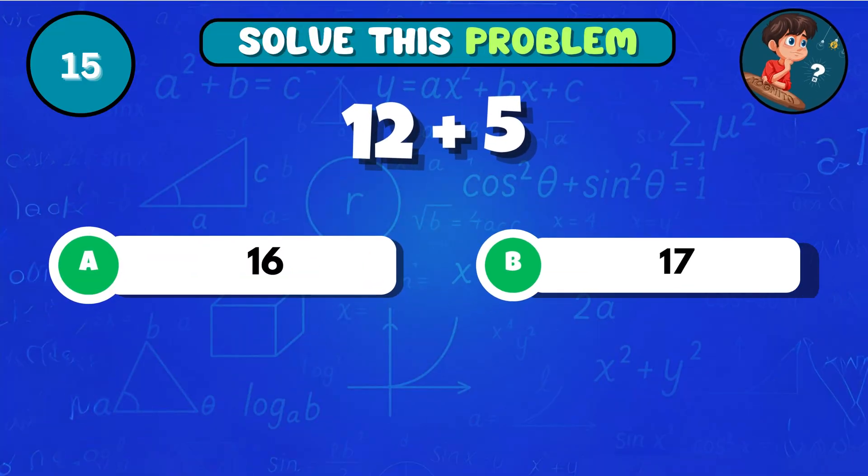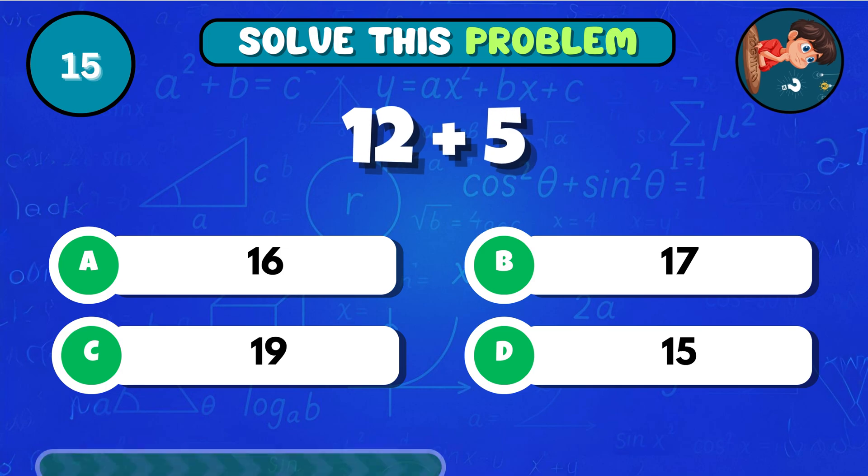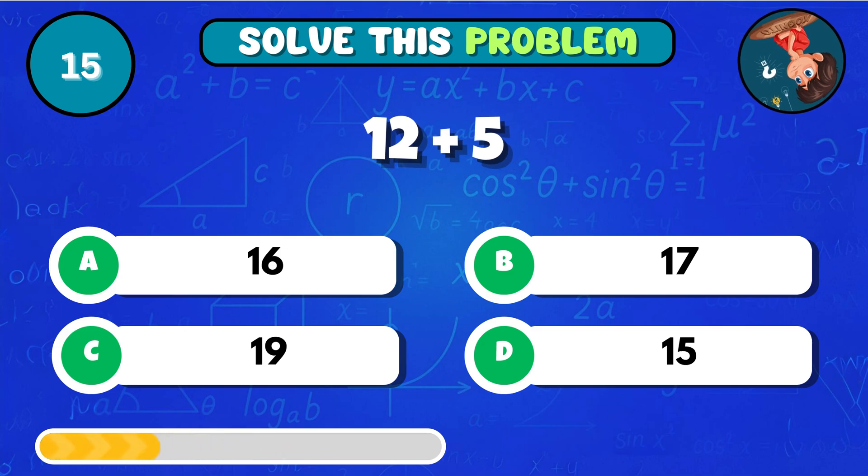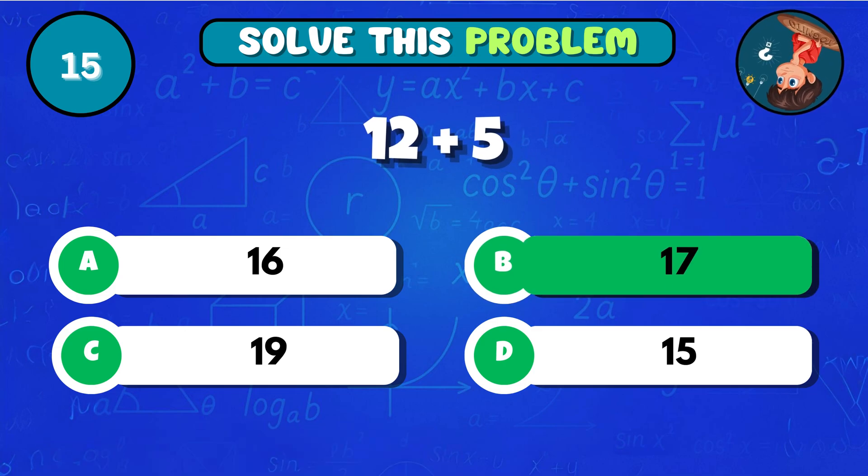What is the total of 12 and 5? It totals B 17!